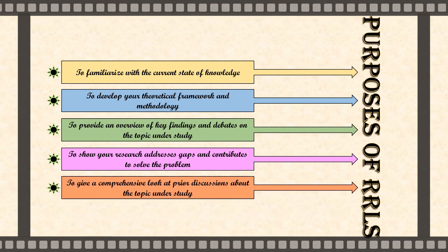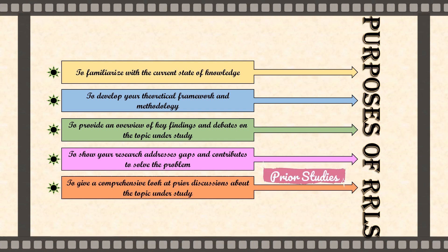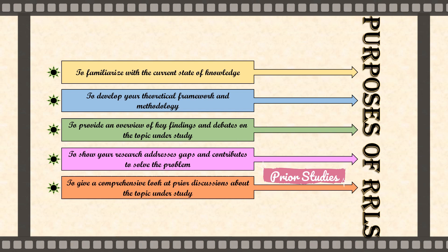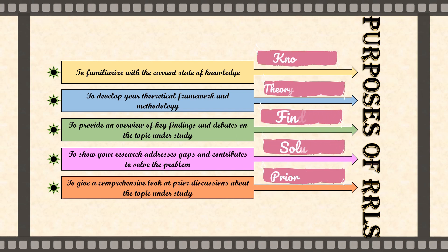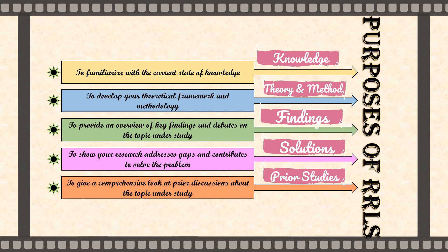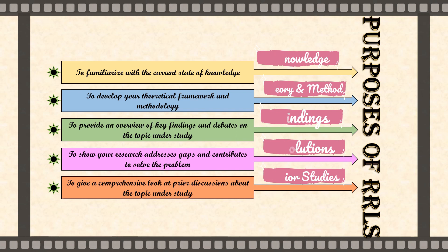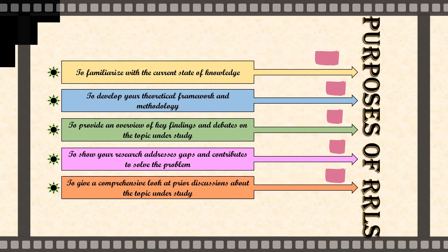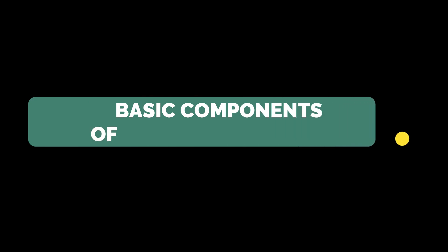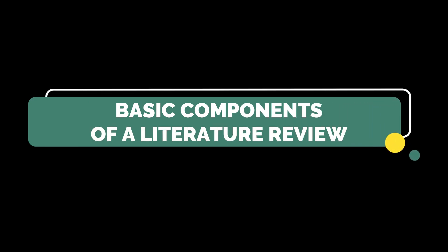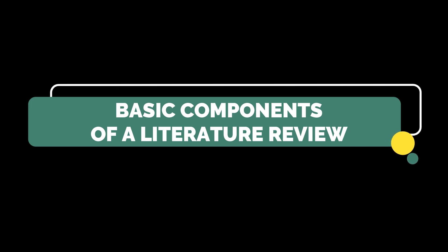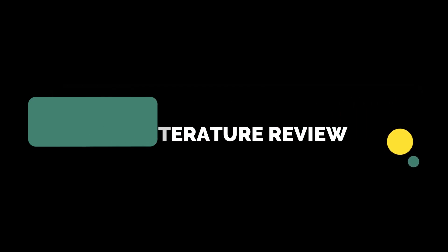The last purpose is to give a comprehensive look at prior discussions about the topic under study. As you begin to gather the literature, you will want to critically read for what has and has not been learned from the research. Through analyzing various sources, you will be able to resolve conflicts among seemingly contradictory previous studies by discussing a common theme or trends. Now that you are familiar with the purposes of RRLS, you must also take into consideration which scholarly writings are generally deemed valuable for your research. As you read works and materials, be sure to take note of the following basic components of a literature review.